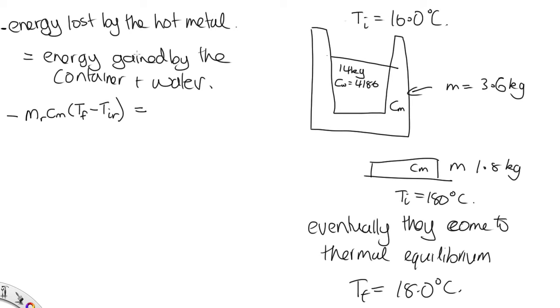And this is equal to the energy gained by the container and water, which is the mass of the water, heat capacity of water, times the Tf minus Ti of water. So these initial temperatures are different, plus the mass of the container heat capacity of metal, Tf minus Ti.